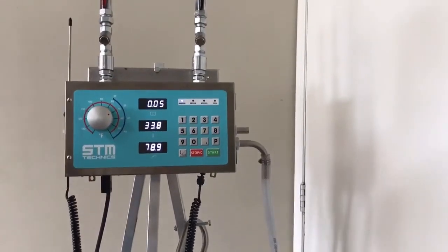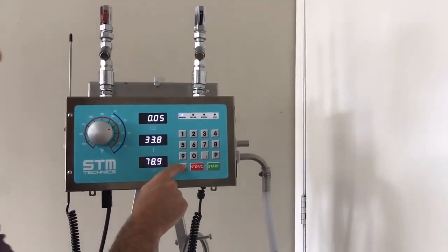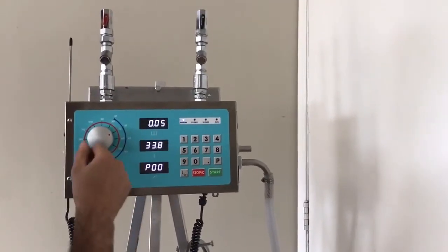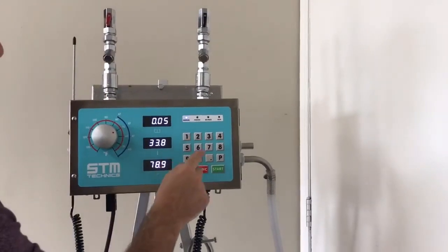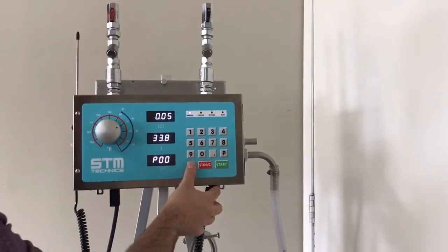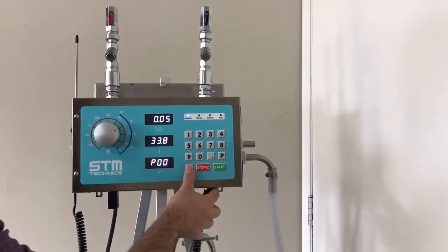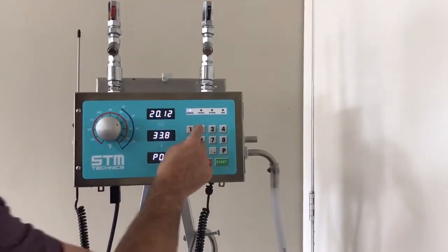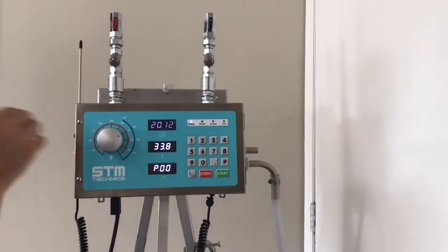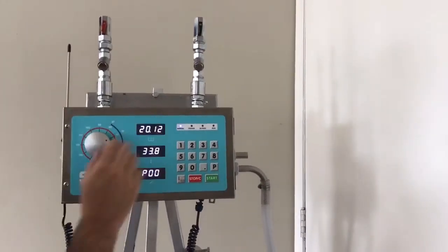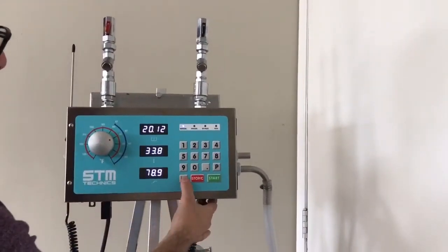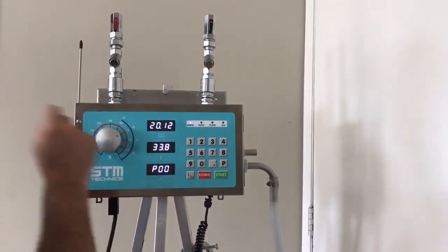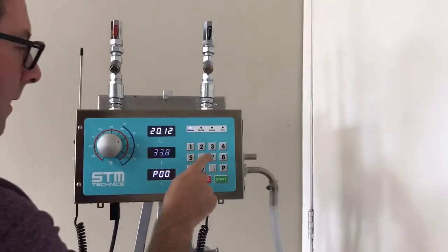To set our quantity, we press the temperature quantity button once, and the top screen flashes. We're going to set 20 pounds, 12 ounces. It gives you a short window to set your settings. After that, it goes solid. Then we hit our temperature quantity button again, and we move into the second window. We're going to set for 70 degrees Fahrenheit.